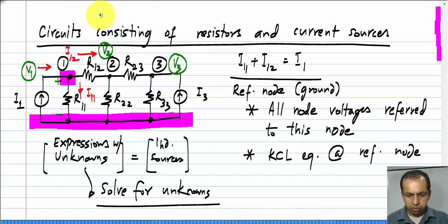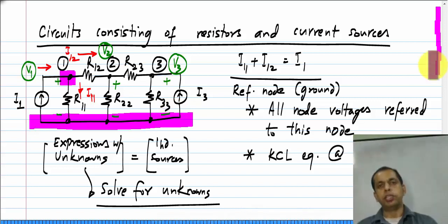Sometimes the reference node is also referred to as the ground node. And similarly, V2 is between node 2 and the reference node and V3 is between the node 3 and the reference node. I will use these variables V1, V2, V3 as the primary variables and write down my equations.